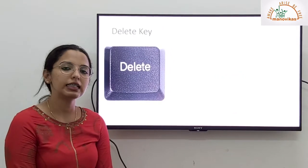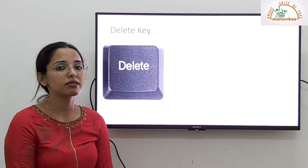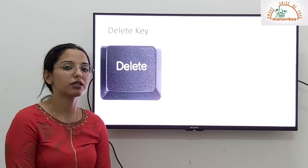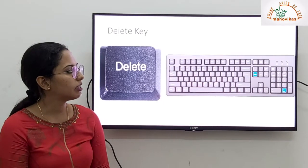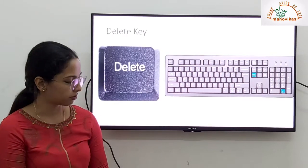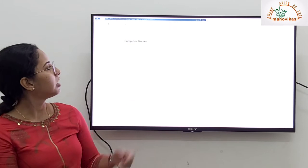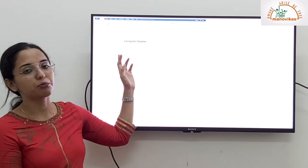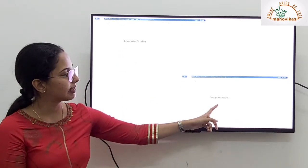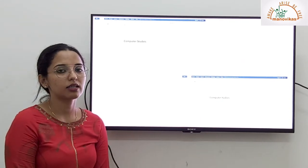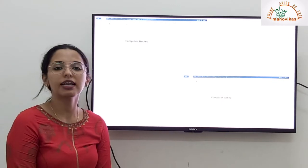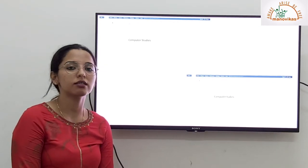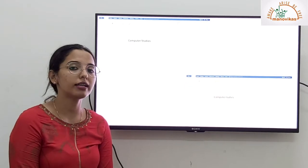Then we have a delete key. A delete key also works as an eraser. It also erases letters, but it erases on the right of the cursor. A delete key is next to the enter key of the keyboard. We have a cursor placed just before S. What will happen if I press delete? When I press delete, the S will be erased. So you see the difference between the backspace and the delete key? A backspace key will erase letters towards the left of the cursor and a delete key will erase letters on the right of the cursor.